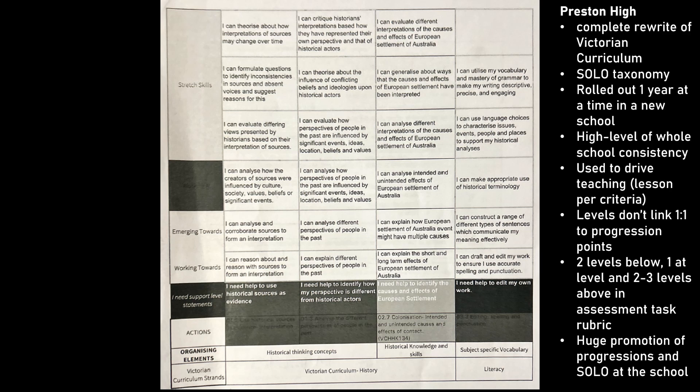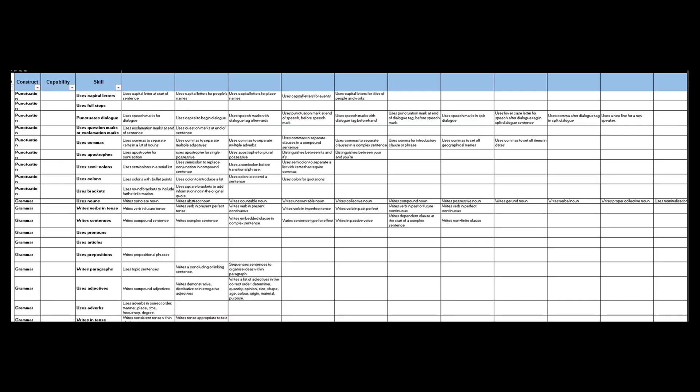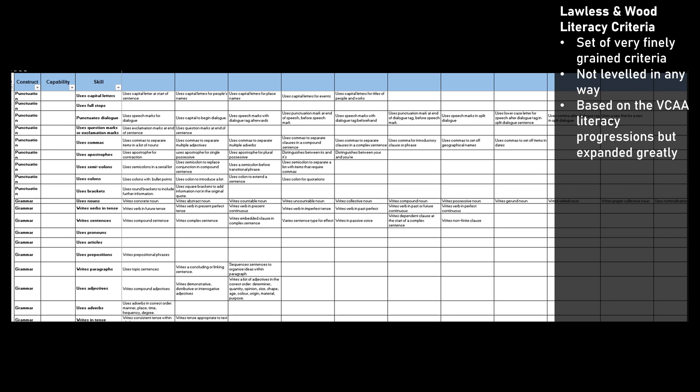There's a science example and a history example using the same sorts of principles. The next one is something that myself and a colleague, Bianca Wood, have been working on for the last year and a bit — it's going to be called the Lawless and Wood Literacy Criteria. We took the existing attempt at a literacy progression by VCAA and expanded it massively, going for really finely grained criteria. We're going to share that open source with the idea that teachers can use it for assessment tools or for helping write their own progressions.